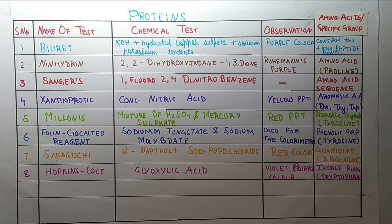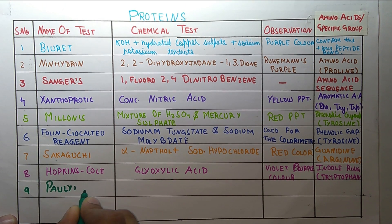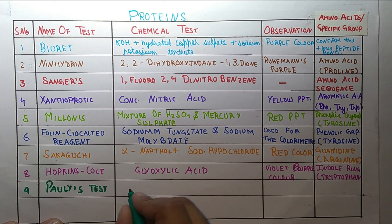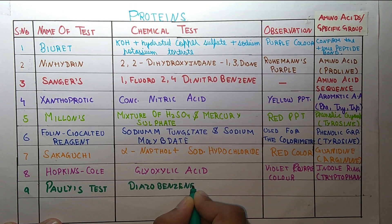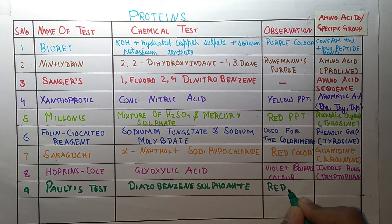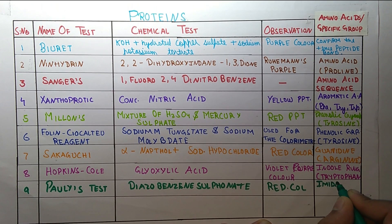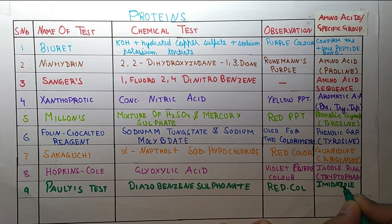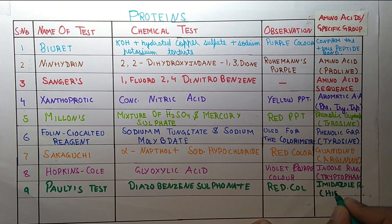The next test is Pauly's test. In Pauly's test we use diazobenzene sulfonate. The color observed is red. It confirms the imidazole ring, and the imidazole ring is present in the amino acid histidine.